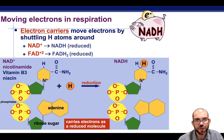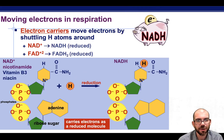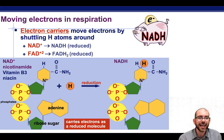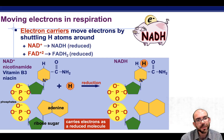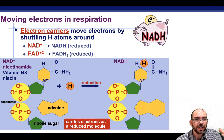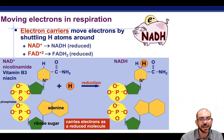As these are transferred around, I want you to think of these electron carriers as putting money in the bank. NADH and FADH are like molecular piggy banks. Each of them is able to carry a hydrogen with an electron. Carrying that electron around is a resource cells can use later on to make ATP. ATP is the focus of cellular respiration.